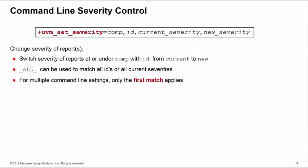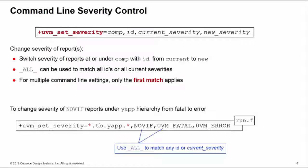Remember, if you have multiple command line settings which apply to a component, the first match only applies. Here's an example. We want to change the severity of reports under the YAP hierarchy with the ID no_VIF, and we want to change them from fatals and downgrade them to a UVM_error severity.